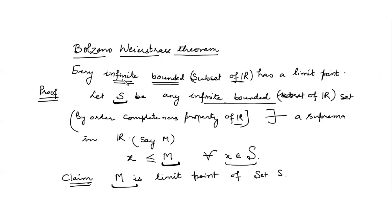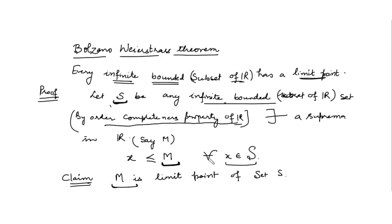Once again, what is given to us: we have any infinite subset of real numbers which is bounded, and we have to prove that this has a limit point. We consider S to be any infinite bounded subset of R. By the order completeness property of R, whenever we have a set which is infinite and bounded from above, there always exists a supremum in R — say it is capital M. Let M be the least upper bound for the set S, meaning all elements of S are less than or equal to M. We claim that M is the limit point of set S.